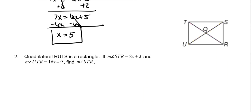The next one, it says that angle STR, so we're talking about this angle right here, is 8x + 3. And angle UTR, so we're talking about this angle right here, is 16x - 9. And we need to find the measure of STR. So we're going to find the yellow. So both of those make up the corner of a rectangle. So you should know the corners of rectangles make 90 degree angles. So we're going to add them together and set them equal to 90. So 16x - 9 plus 8x + 3 is equal to 90 degrees.